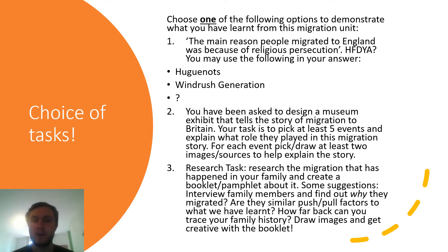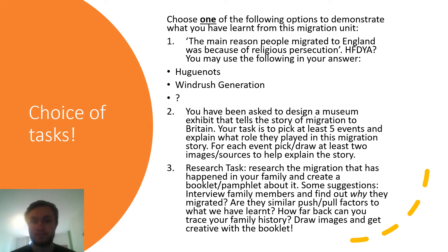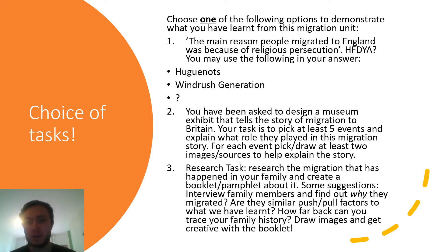The first task is an exam question — it's one that we've done lots of times in class. It's a 'how far do you agree' question. The question is: 'The main reason people migrated to England was because of religious persecution. How far do you agree?' It says you may use the following in your answer: Huguenots or the Windrush generation.